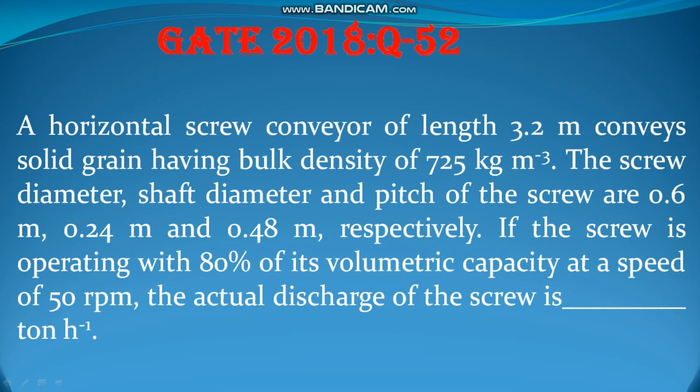The problem is about the screw conveyor. A horizontal screw conveyor of length 3.2 meter conveys solid grain having bulk density of 725 kg per cubic meter.